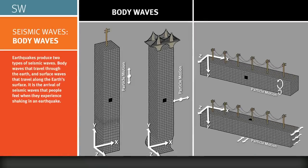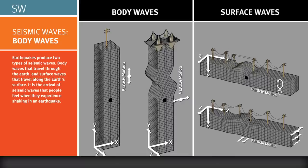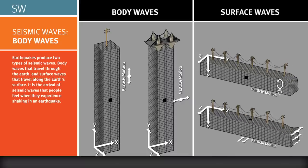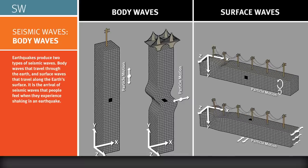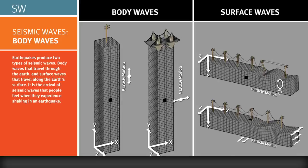Body waves travel through the Earth, and surface waves travel along the Earth's surface. It is the arrival of seismic waves that people feel when they experience shaking in an earthquake.